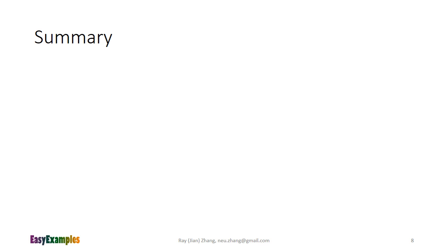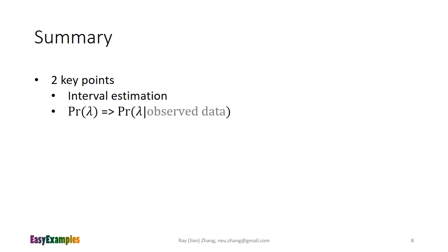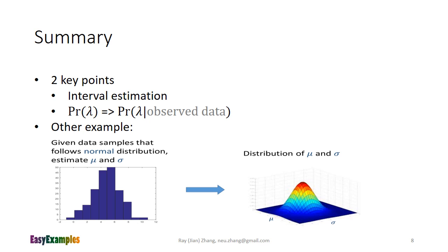At the end, we wrap up with a summary about Bayesian inference. There are two key points to remember. First, Bayesian estimation is an interval estimation — it estimates the distribution of the parameters rather than a single value. Second, it is a process of improving the distribution function by considering the observed data. In the example here, we only considered a single unknown parameter. In practice, we usually need to estimate the joint distribution of multiple unknown parameters, but the procedure is very similar. As a further exercise, you can try estimating parameters mu and sigma for a normally distributed dataset, and plot their joint distribution as shown in the figure.